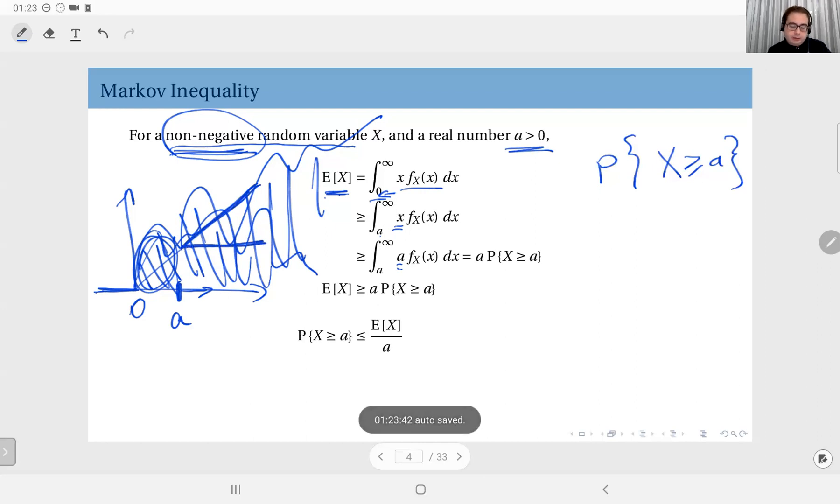Secondly, instead of this x here, if I replace it with a - look, after a, x is increasing. This is x and this is a. For any x value, a is a constant number. So if I replace x by a, I'm sacrificing this area here. I make this integral even smaller, and so this greater than or equal to sign here is valid. But look, a is a constant, so I can take it out of the integral: a times the integral from a to infinity of the pdf.